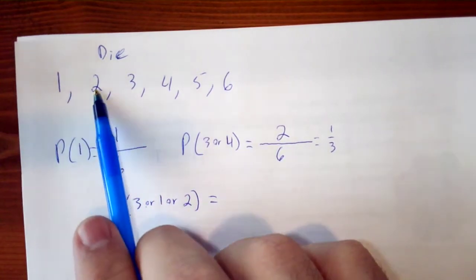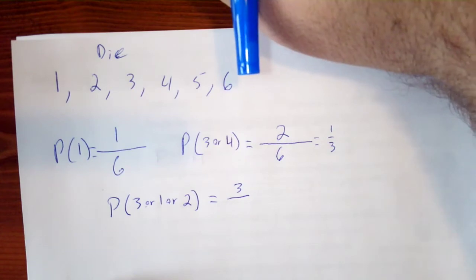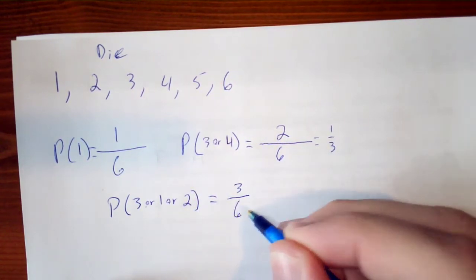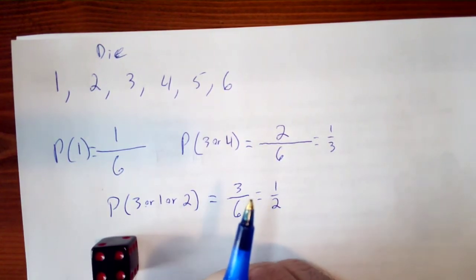So we have one, two, or three. That's three possibilities. And we have six possible outcomes, which gives us a one-half probability of that event happening.